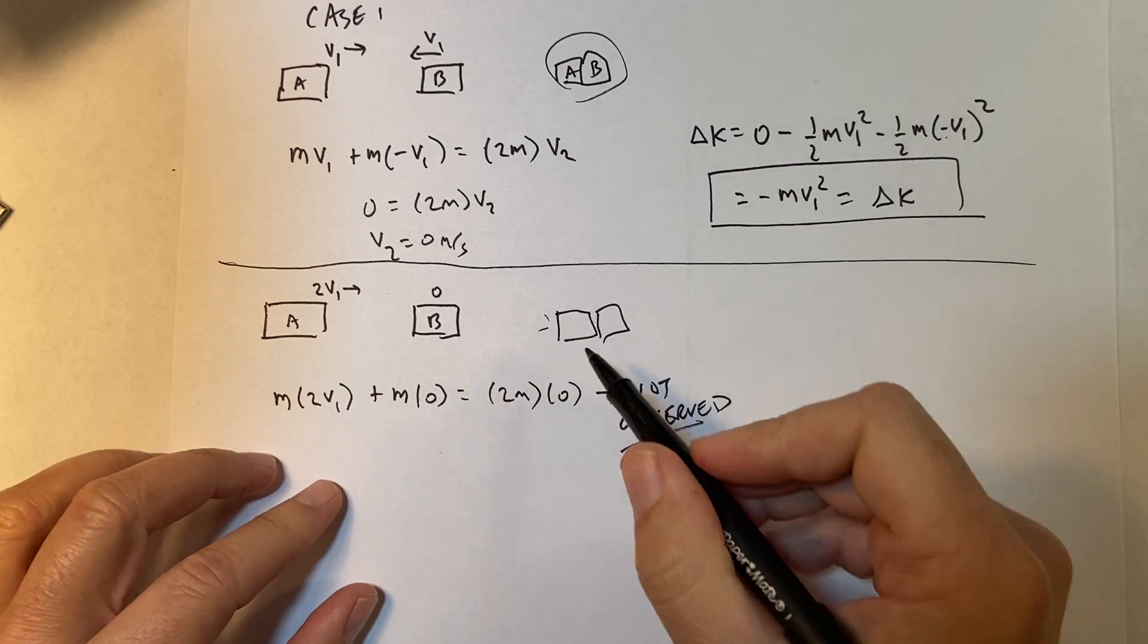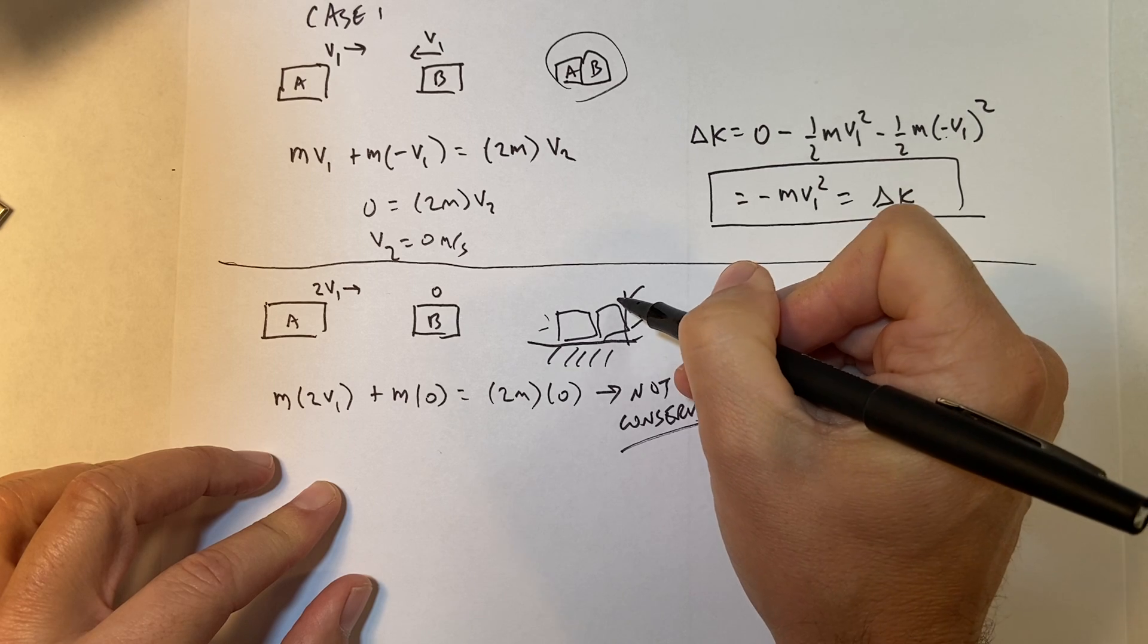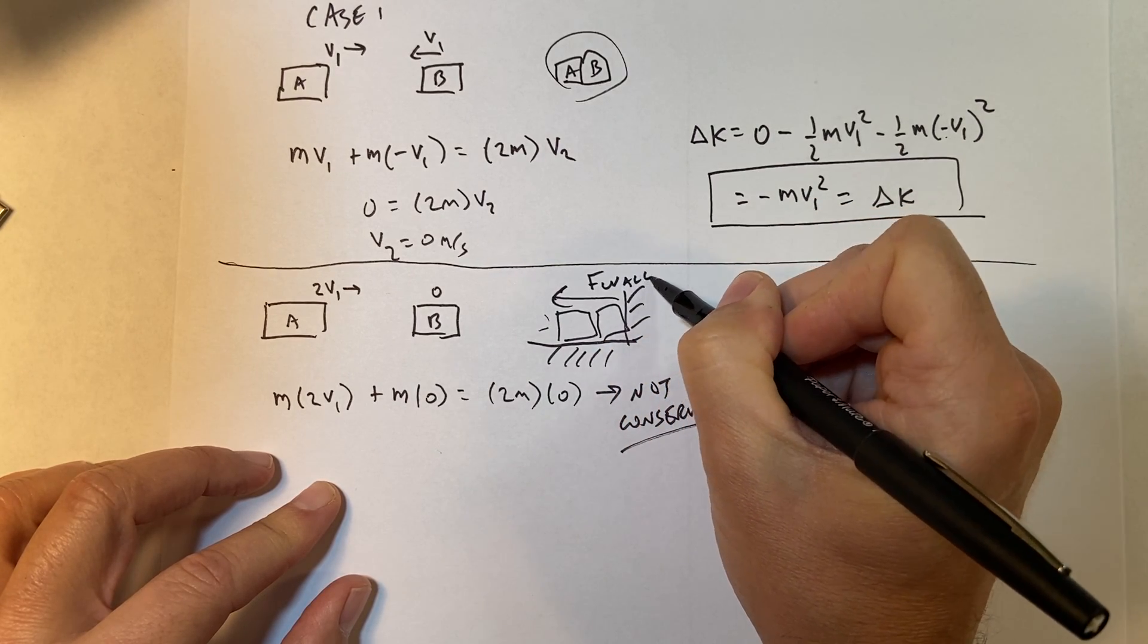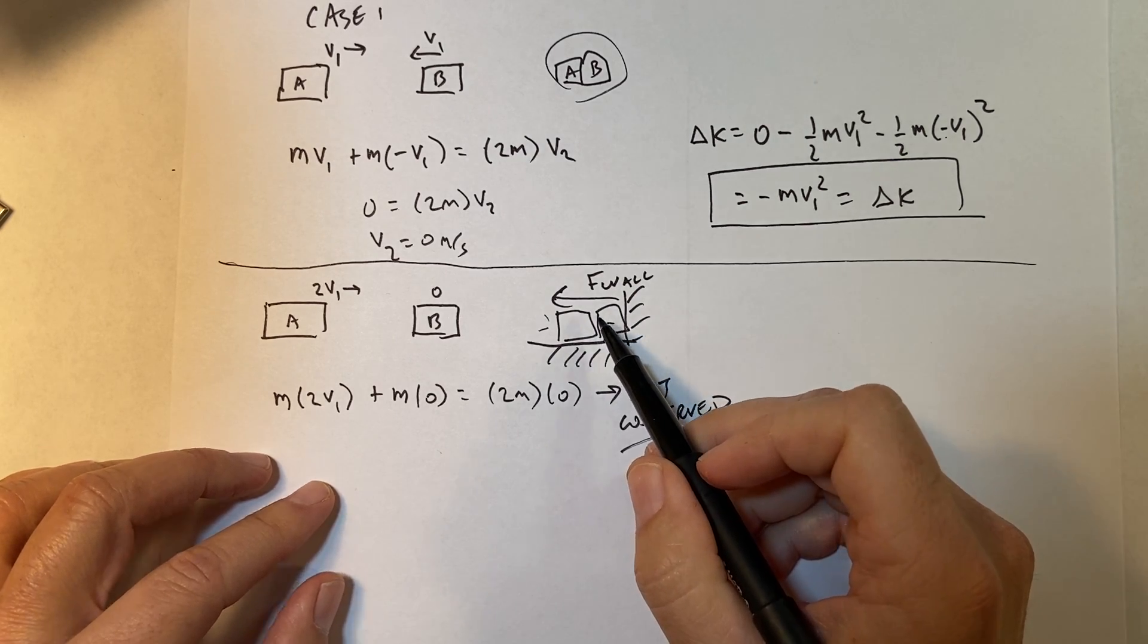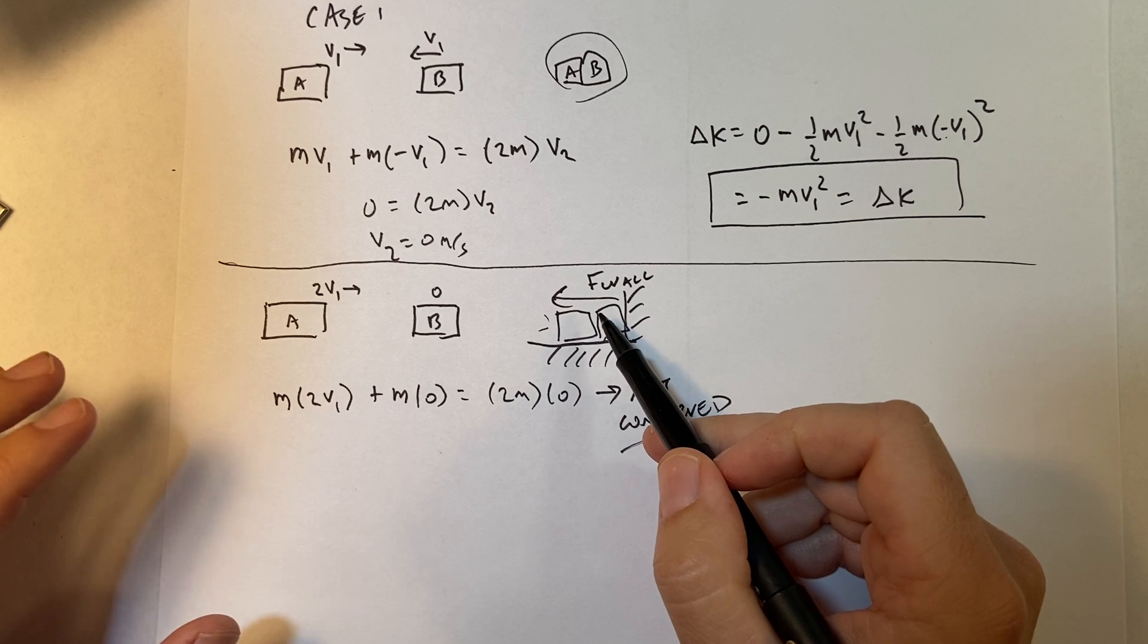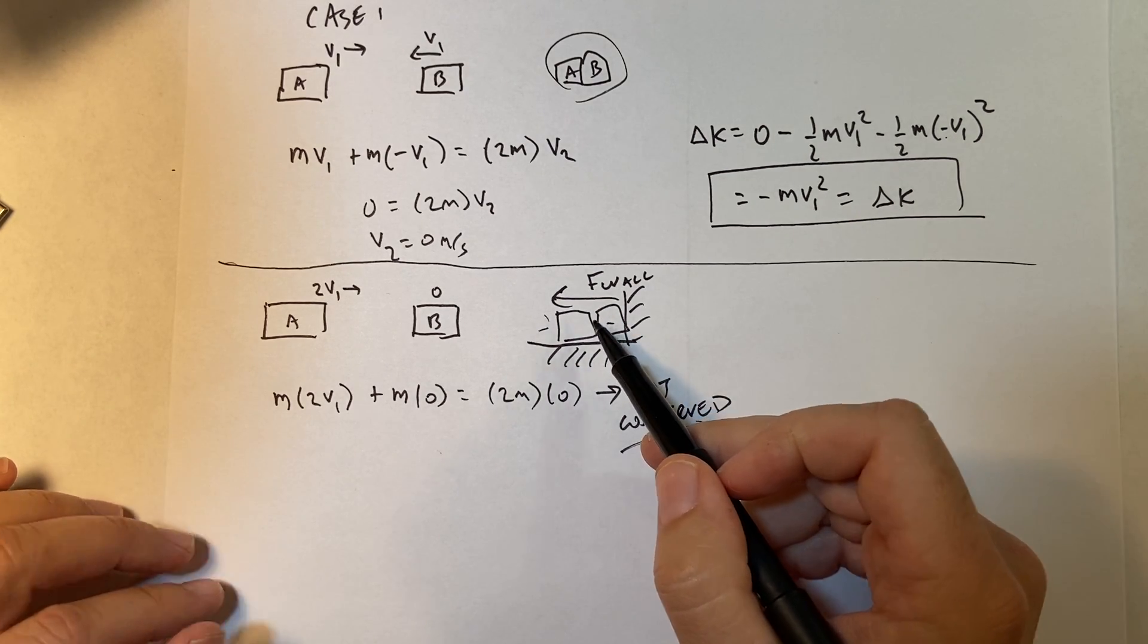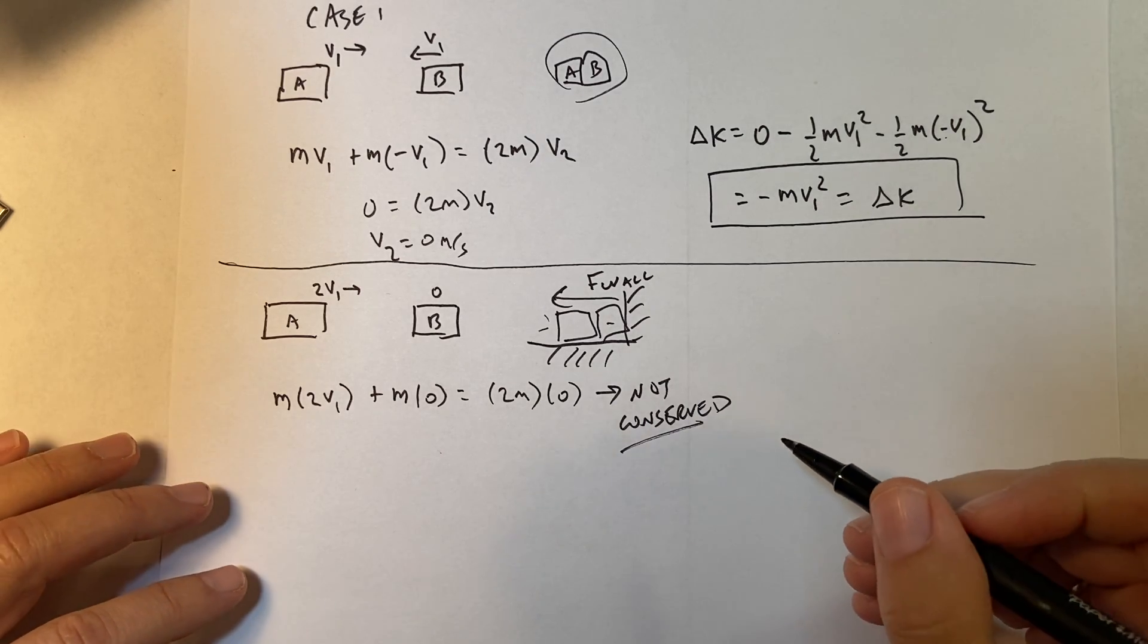So if I write down the momentum before I get M times 2V1 plus M times zero. So this is the momentum of that one. This is momentum of that one beforehand. And this is going to be equal to 2M times zero. So that's not conserved. And that's okay. And I'll tell you right now, it's not conserved because during the collision, there's an external force on car B, which means if I take the system of car A and car B, there's an external force and momentum is only conserved when we have a system with no external forces. So this one, momentum is not conserved.